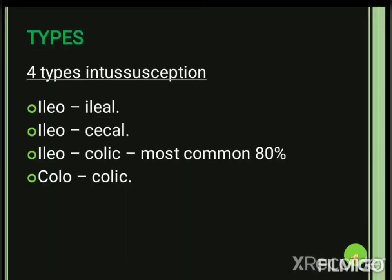There are four types of intussusception. First is ileo-ileal, where the proximal part of the ileum telescopes into the distal part of the ileum. Next is ileocecal, where the ileum telescopes into the cecum. Then ileocolic, where the ileum telescopes into the colon — this is the most common type, accounting for about 80% of cases. Finally, colocolic, where the proximal part of the colon telescopes into the distal colon.